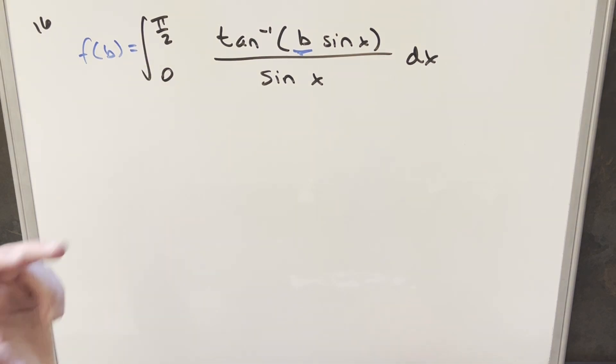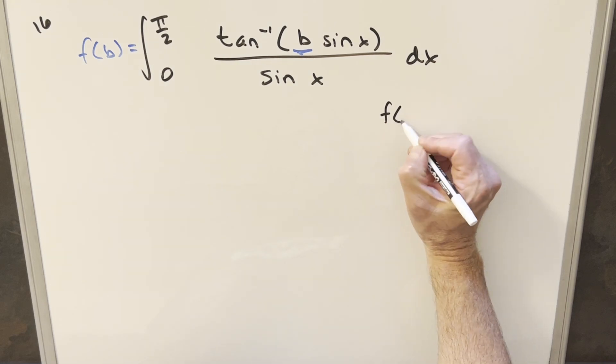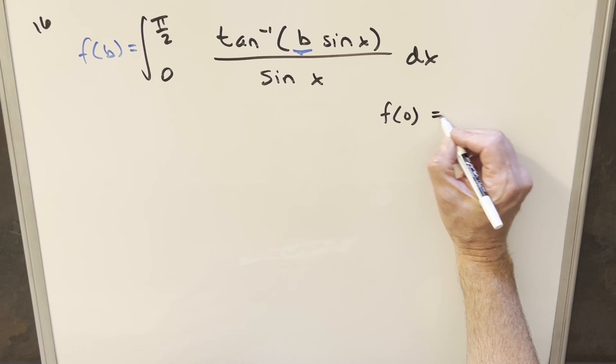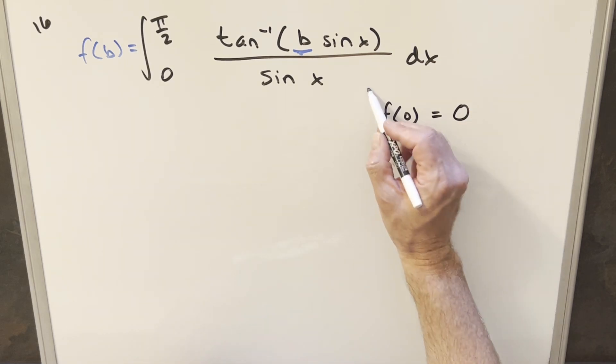And one thing we can notice for later is, if b is 0 here, and we want our F of 0 value, just notice arctan of 0 is 0, so the whole integral becomes 0. So we have this value that we can use later on.